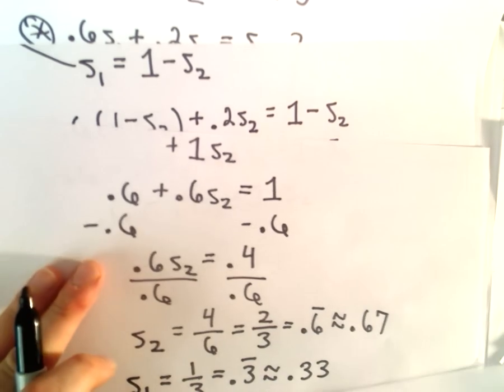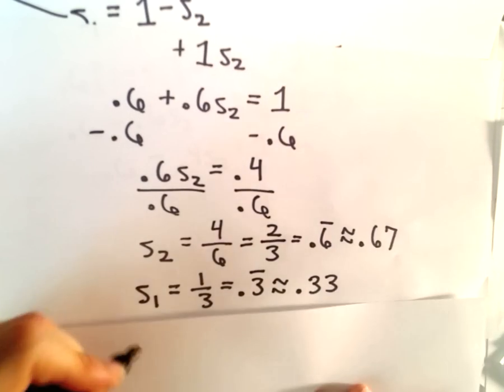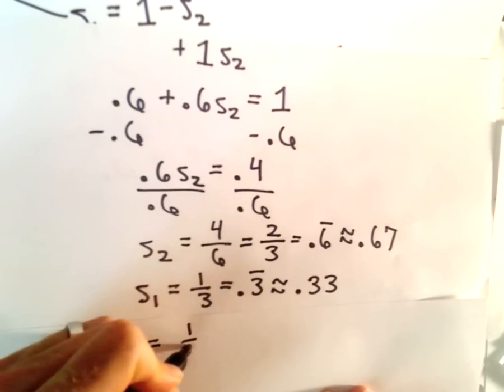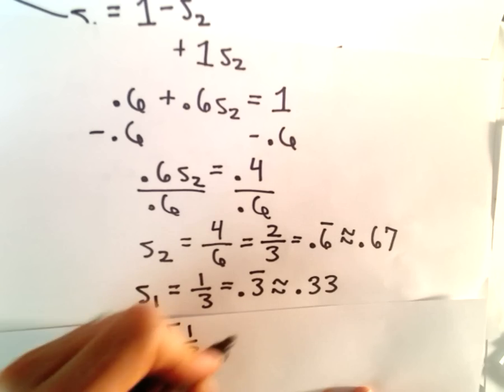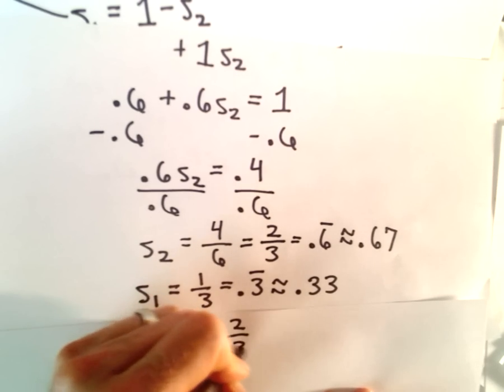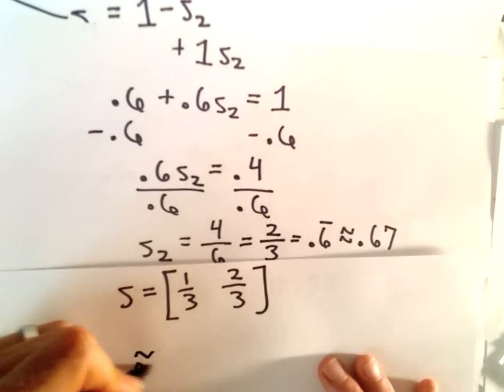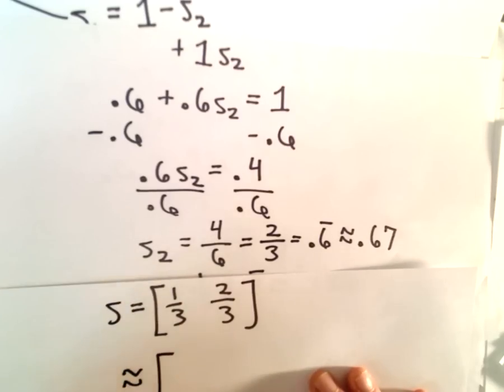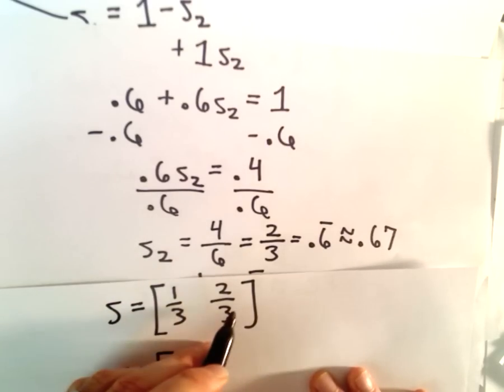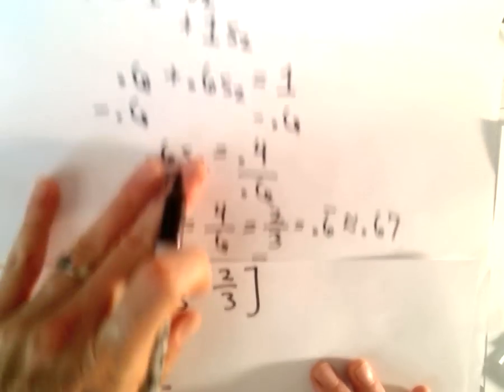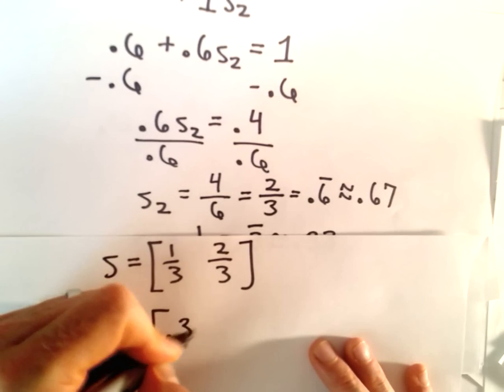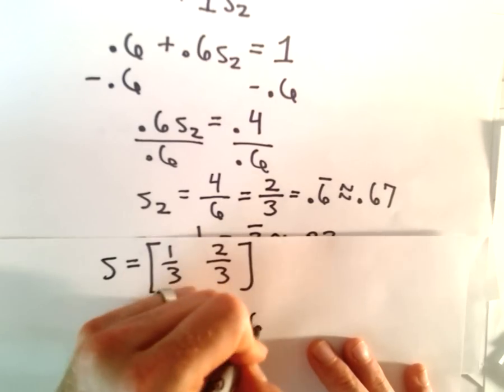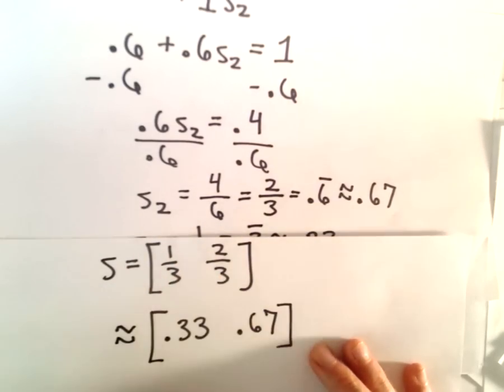So what it says in this case is our stationary matrix S will have a first entry of 1/3 and the second entry will be exactly 2/3. Or if you think about it in terms of market share, based on that transition matrix, if you think about this as being company A and the competitors, it says in the long run company A can expect to have roughly 33% of the market share, while the rest of the market share goes to its competitors.